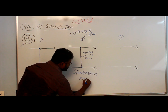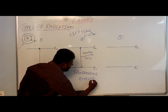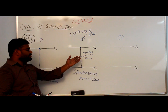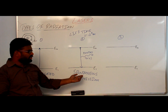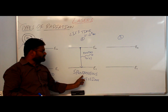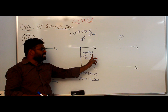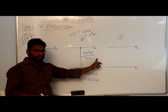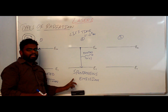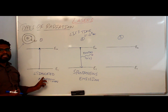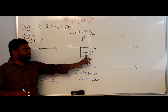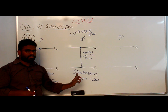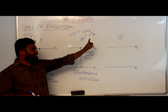This process is known as spontaneous emission. We are not supplying any energy for this to happen — it occurs automatically, hence spontaneous. Due to this downward transition, energy is emitted — that's why it is called emission. In stimulated absorption, energy is absorbed; here, energy is emitted — that's why it is called emission.